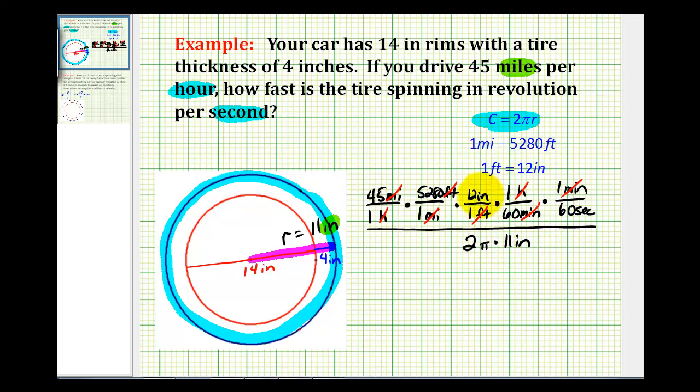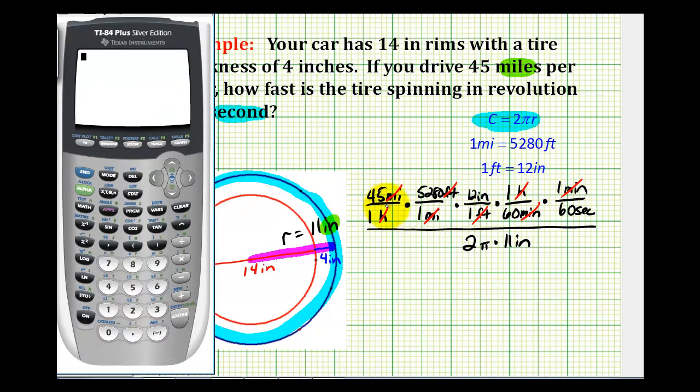Let's go ahead and use our calculator for this. So we'll multiply all these fractions together, and then divide by 2 pi times 11. So we'll go ahead and multiply across the numerator. That'll be 45 times 5,280 times 12. And we'll divide all this by 60 times 60.